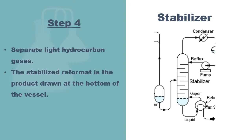Next, the liquid is then passed to the stabilizer. In the stabilizer, light hydrocarbon gases are separated. The stabilized reformate is the product drawn at the bottom of the vessel.